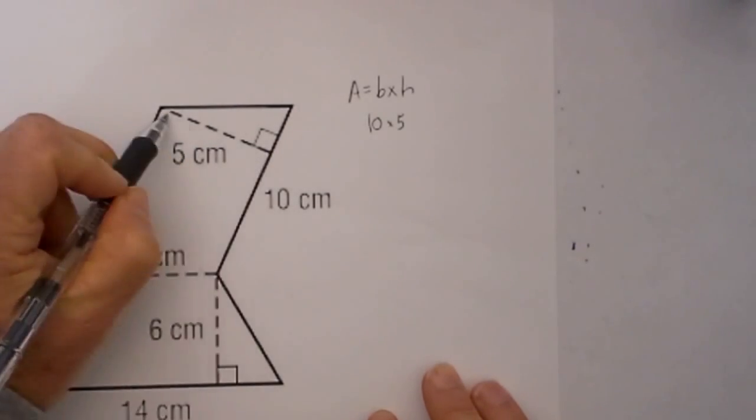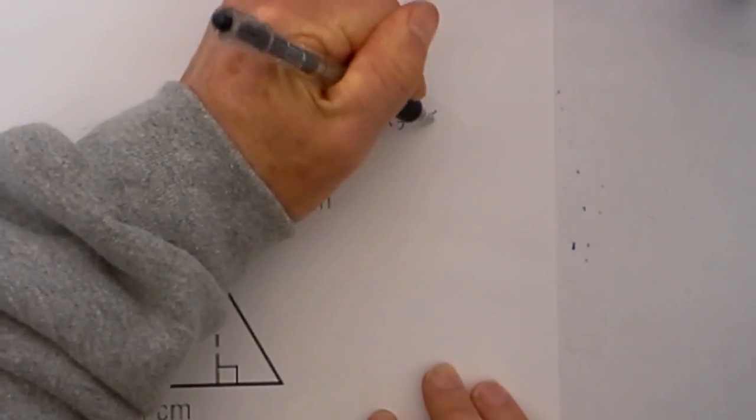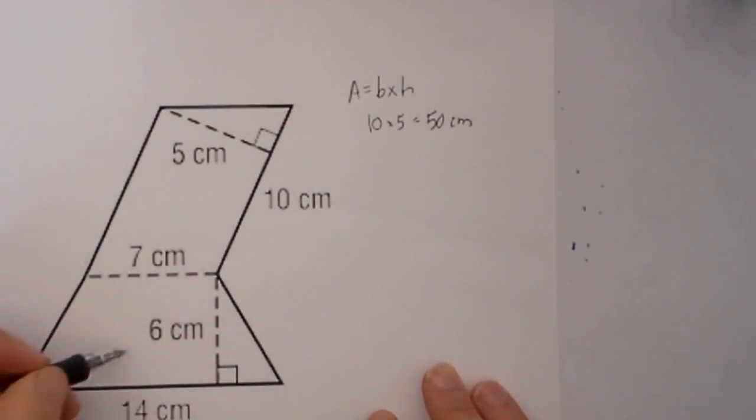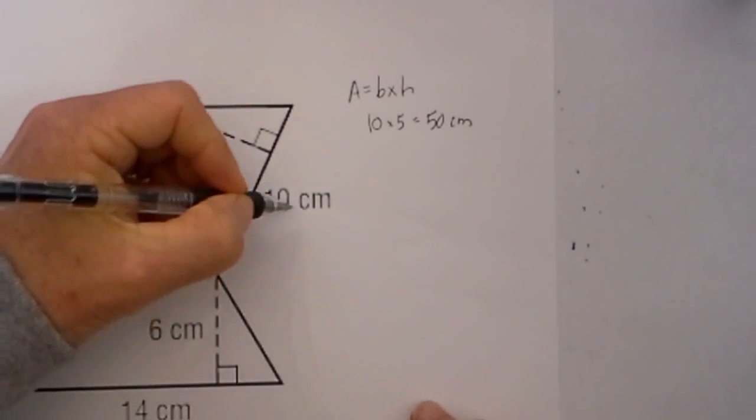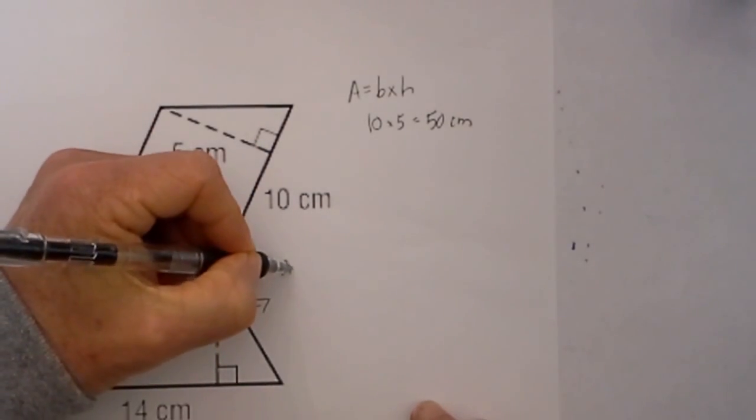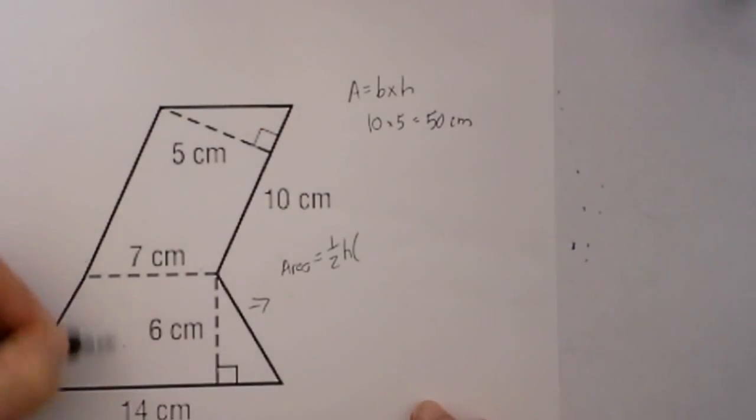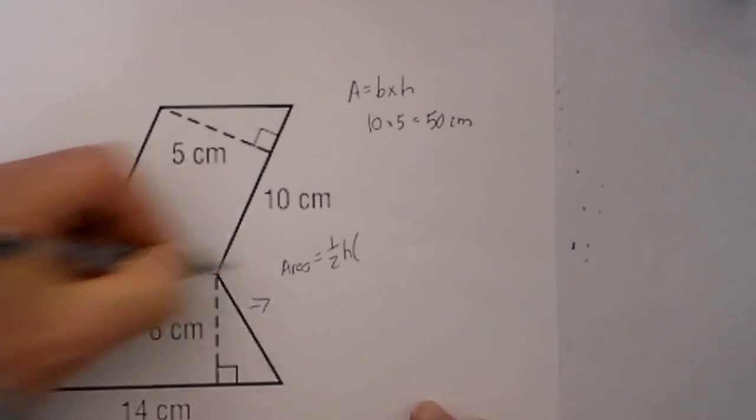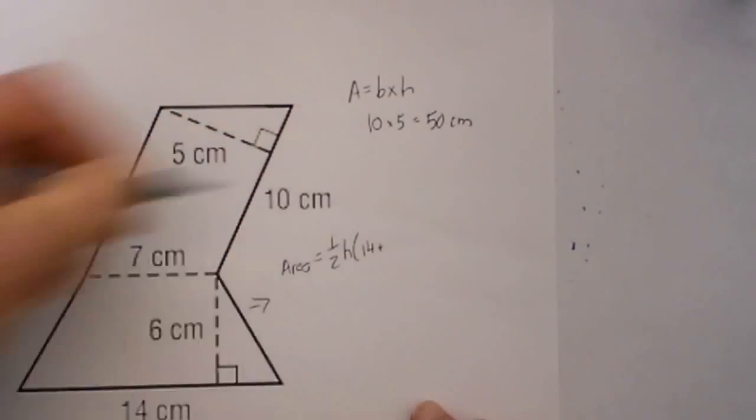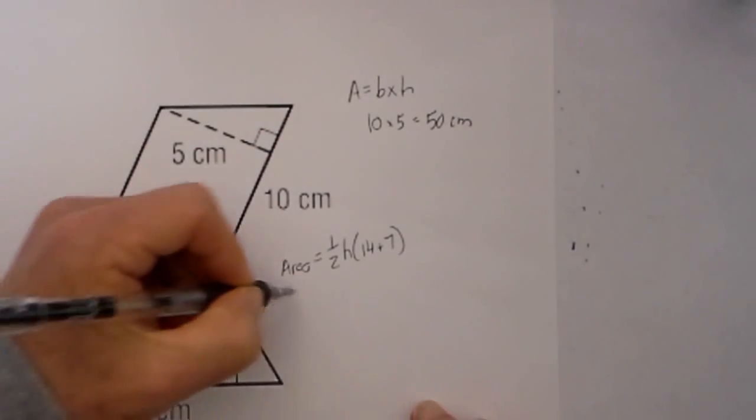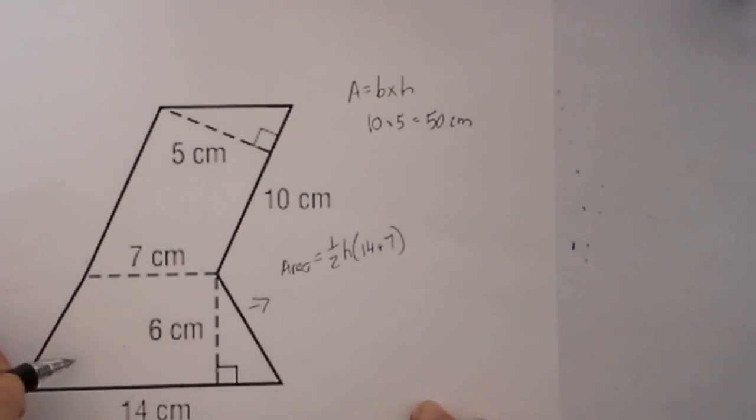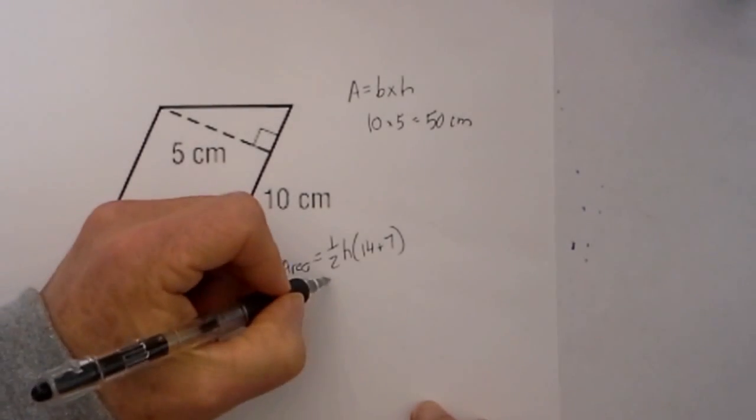Next we have a trapezoid. The area formula for a trapezoid is 1/2 the height times base 1 plus base 2. So base 1 is 14, plus base 2 is 7, and then I'm going to multiply the height. Again, in a trapezoid, the height is perpendicular to the base—to both bases—so that is going to be 6.